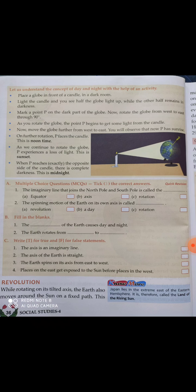As we continue to rotate the globe, P experiences a loss of light — this is sunset. We must not stop; we keep rotating the globe. As P moves away from the candle, the light gradually disappears. The light keeps decreasing, which means it is getting darker — sunset is happening.